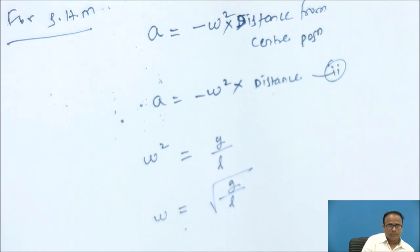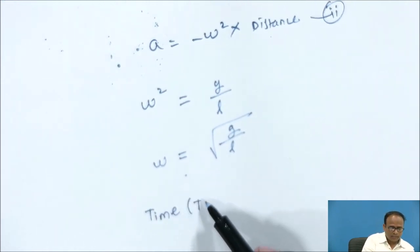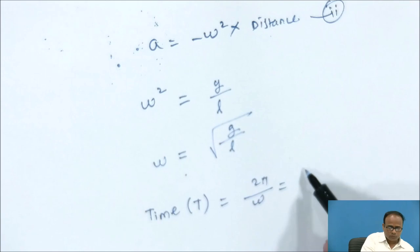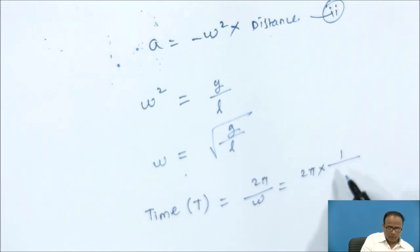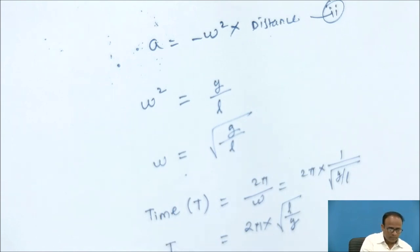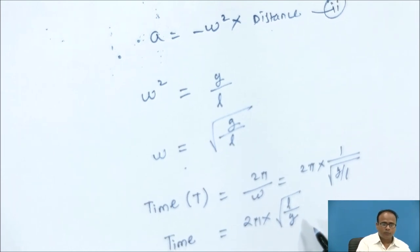As the motion of a simple pendulum is simple harmonic motion, we can write the time period T = 2π / omega, which equals 2π × (1 / √(g/L)), so that equals 2π × √(L/g). The time period of a simple pendulum is given by the expression T = 2π √(L/g). This is the required expression.